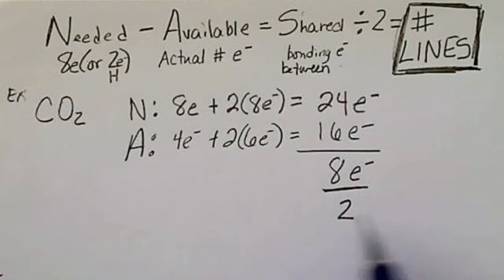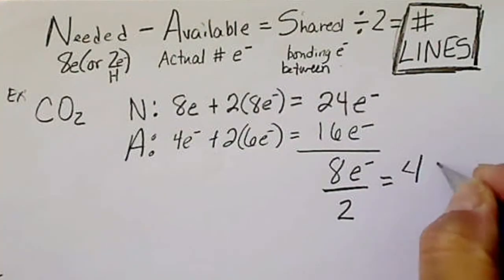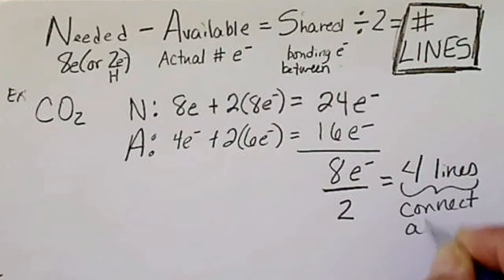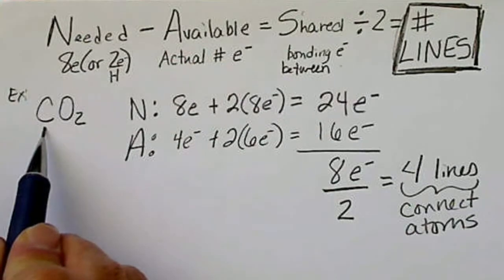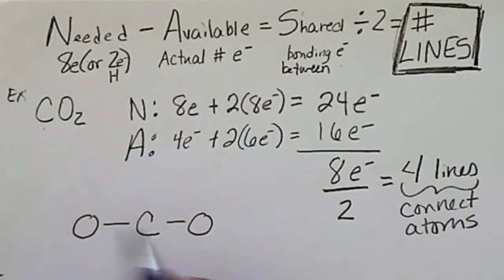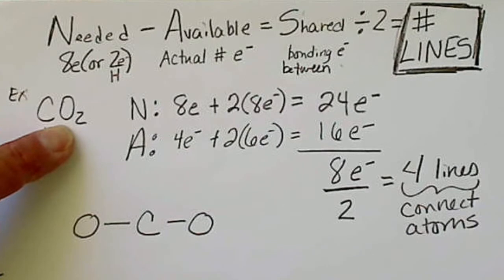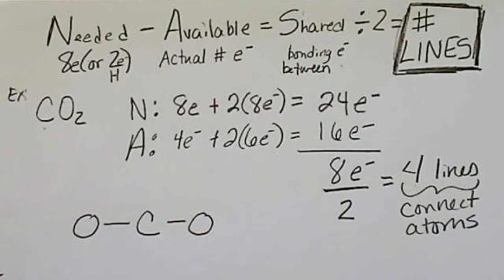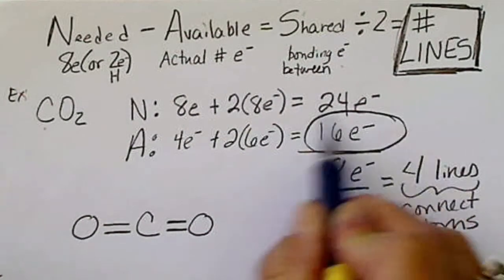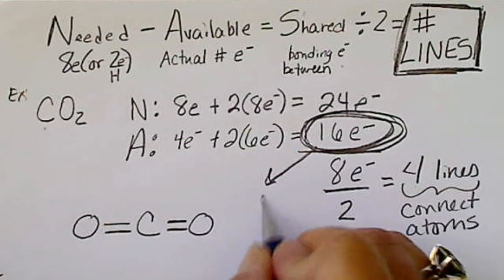Subtracting 16 available from 24 needed gives us eight electrons, and dividing by two gives us four lines. These lines must connect atoms — they can't go nowhere. We put the first atom written, carbon, in the middle, connect it to each oxygen, and since we still need two more lines we split them up, putting one extra line to each oxygen. So carbon has double bonds to each oxygen.